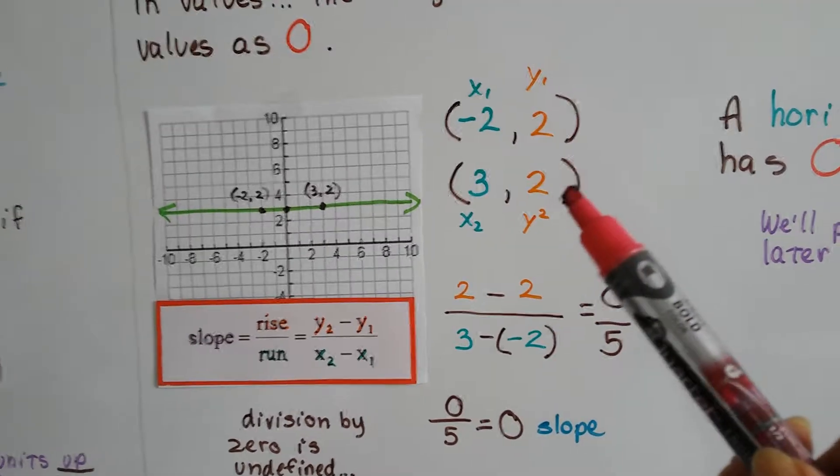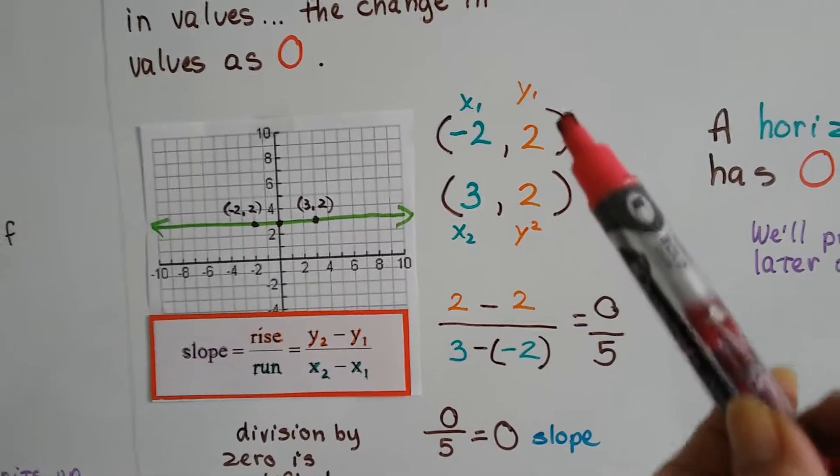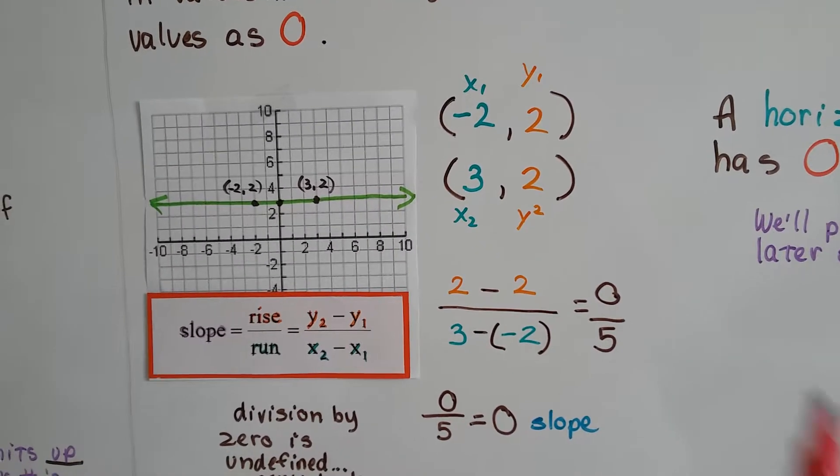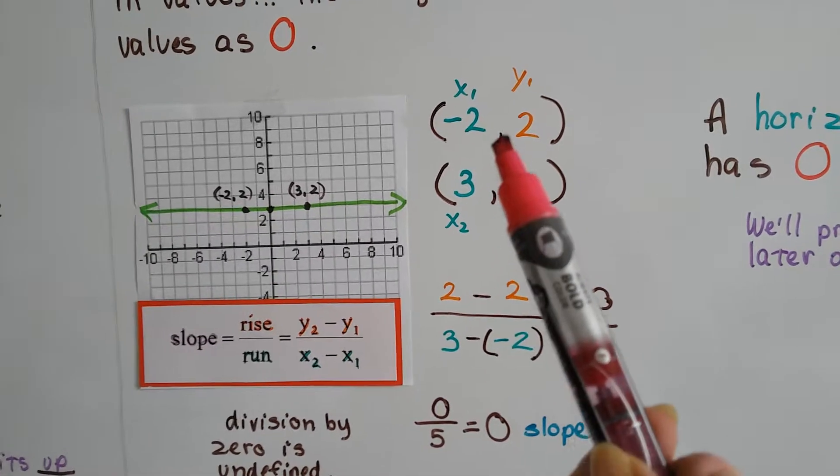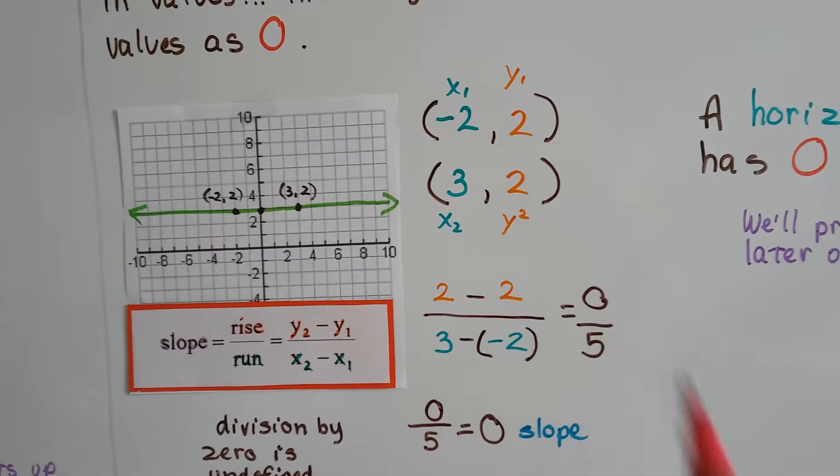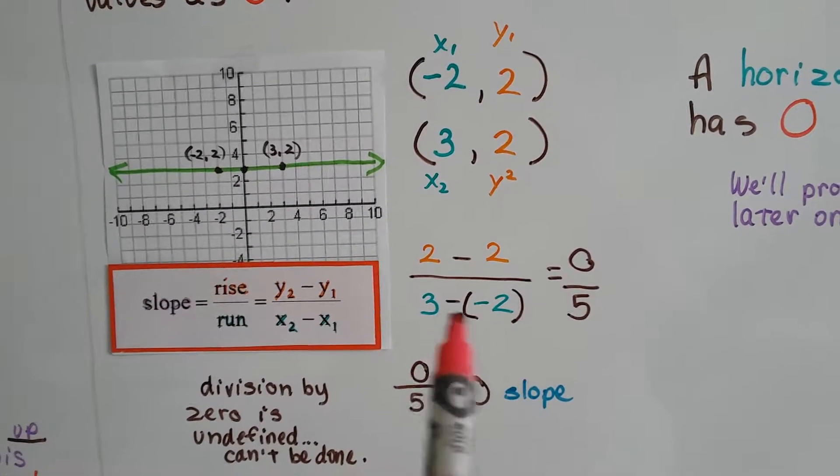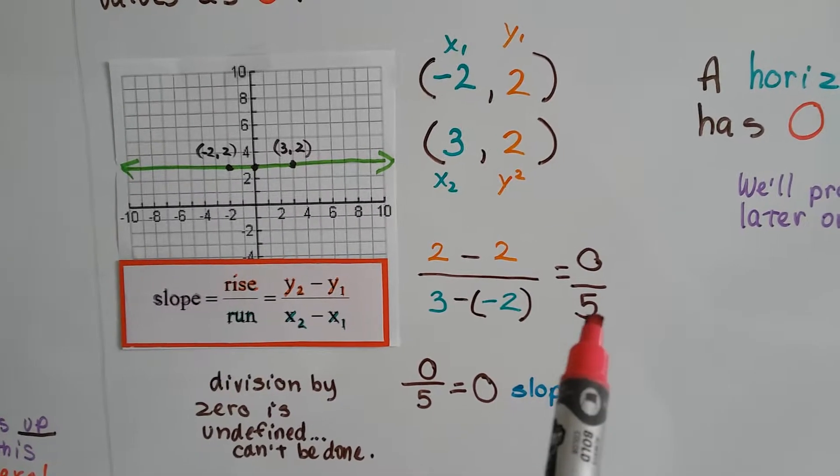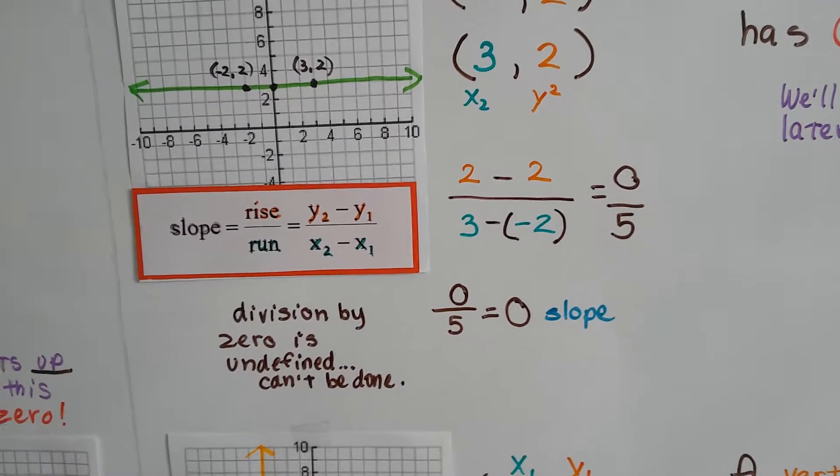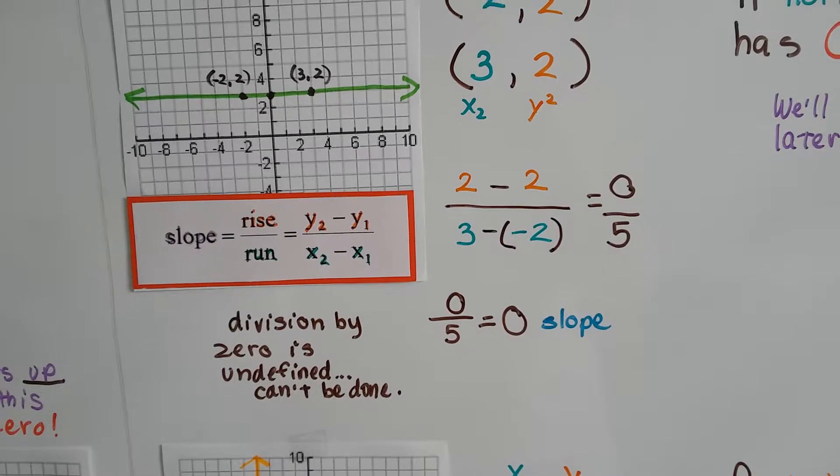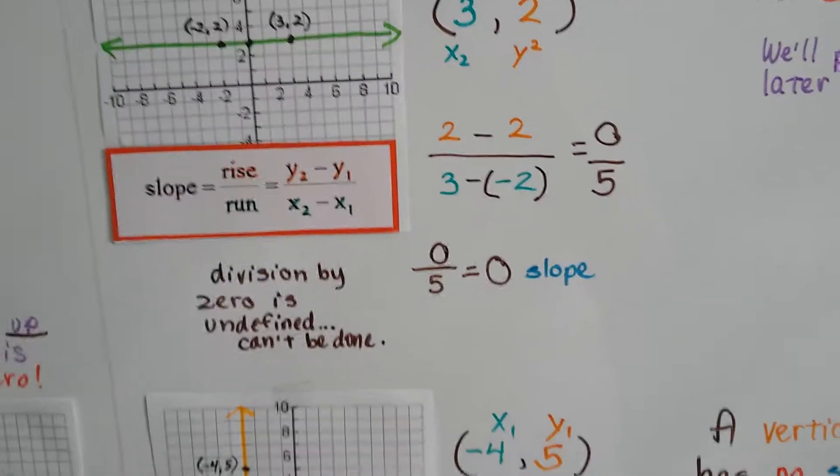We take y2 minus y1, 2 minus 2, that's zero. And we take x2, 3, minus x1, the negative 2. Remember, when you subtract a negative, you add the opposite, so we get zero over 5. That's a zero slope. Division by zero is undefined and can't be done.